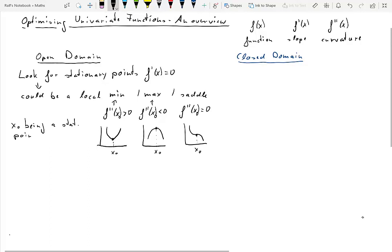So x0 being a stationary point in an open domain is a necessary condition for x0 being an optimum, minimum or maximum.